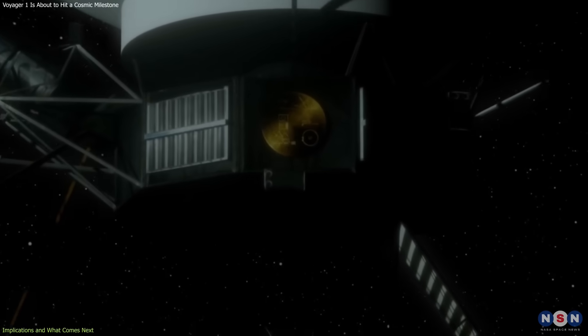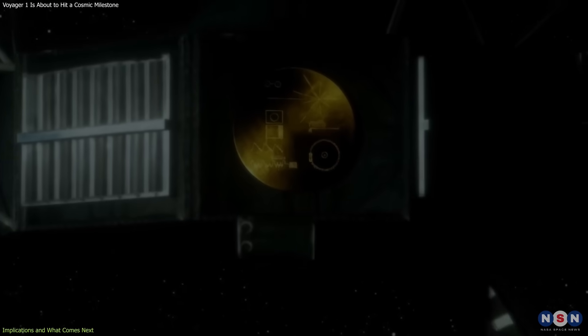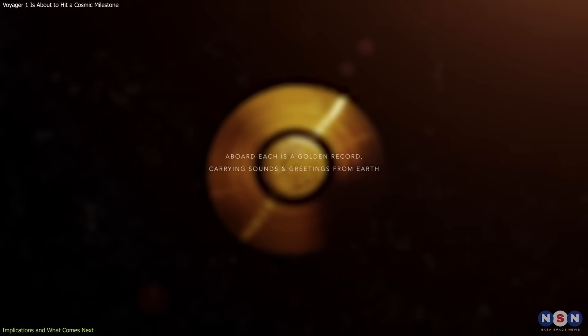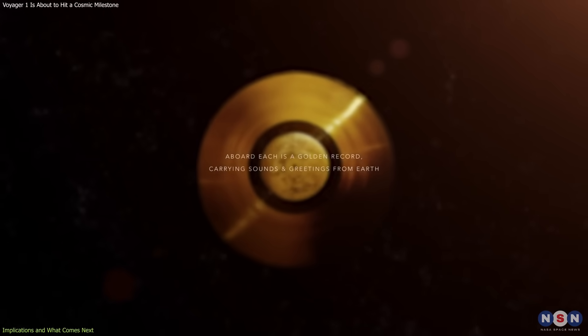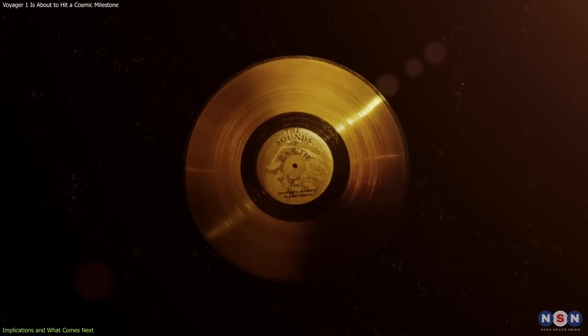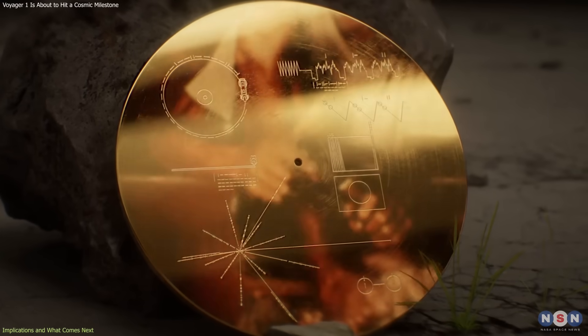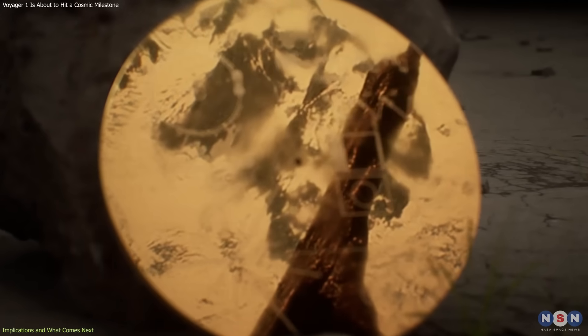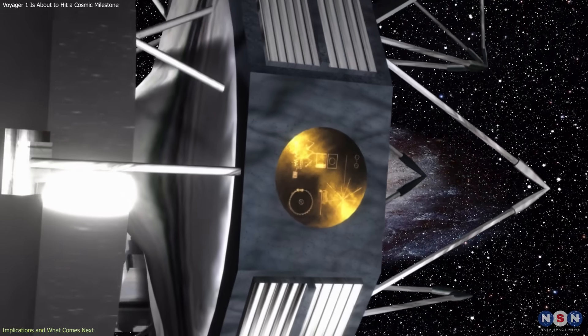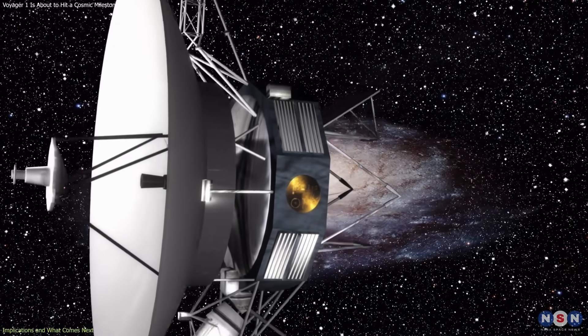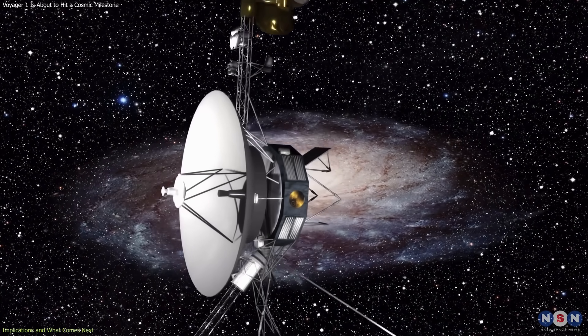Inside Voyager 1 is the Golden Record, a copper disk containing sounds, images, and greetings from Earth in 55 languages. It was designed as a time capsule, a message to any civilization that might encounter it. Even if it's never found, it symbolizes humanity's curiosity and intent to connect beyond its own world.